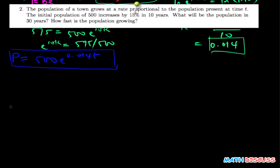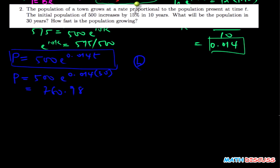Using our equation, we have p equals 500 e to the power 0.014 times 30, and that is going to give us 760.98. So this is the population in 30 years. For the next part, which is part B, we should find how fast is the population growing.